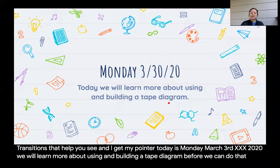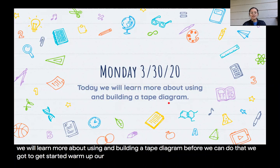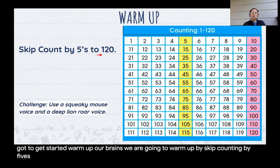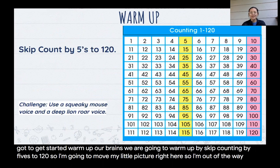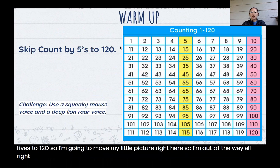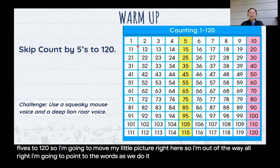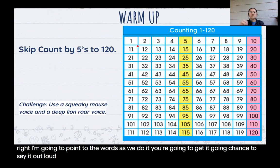Before we can do that, we got to get started and warm up our brains. We are going to warm up by skip counting by fives to 120. So I'm going to go and move my little picture right here so I'm out of the way. I'm going to point to the words as we do it. You're going to get a chance to say it out loud. Let's try it.